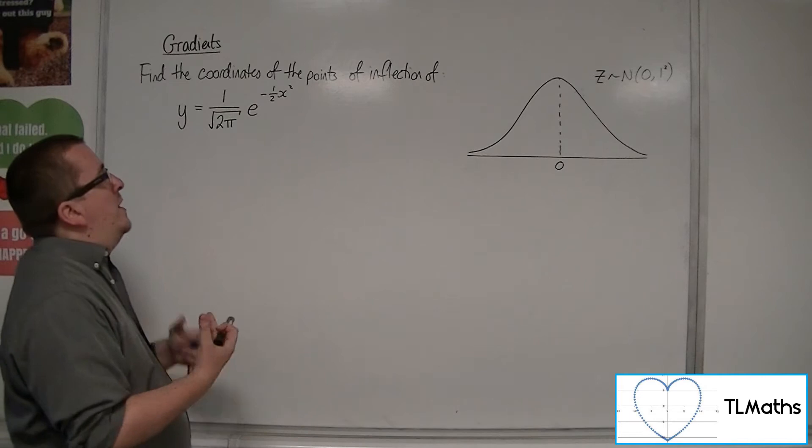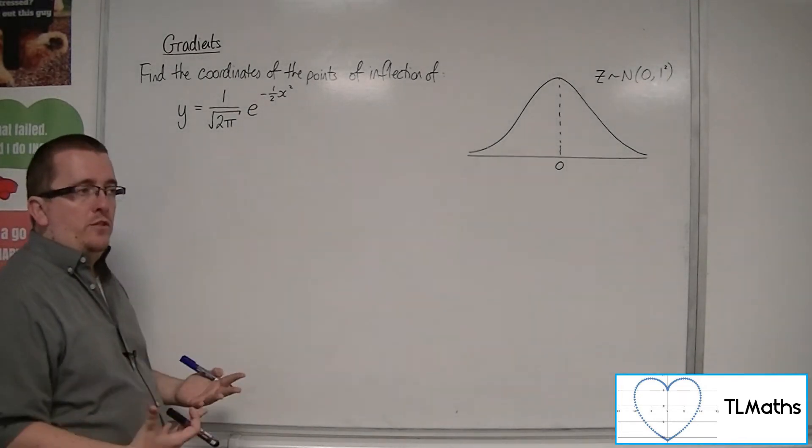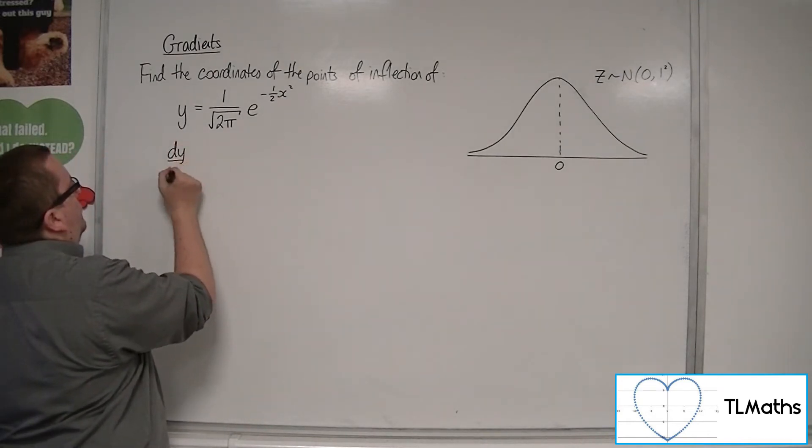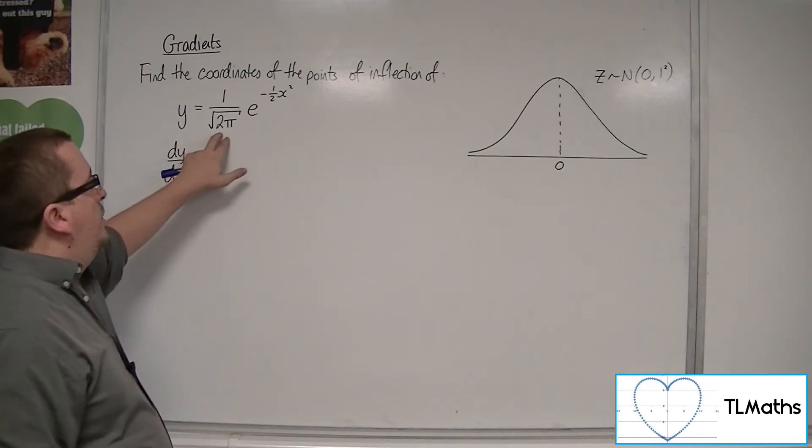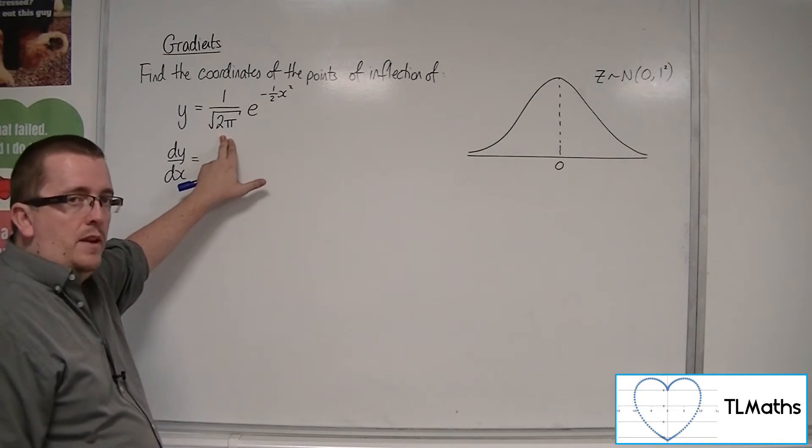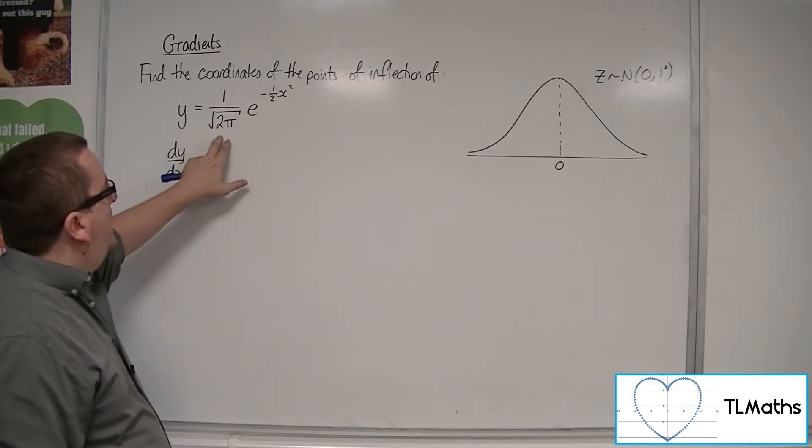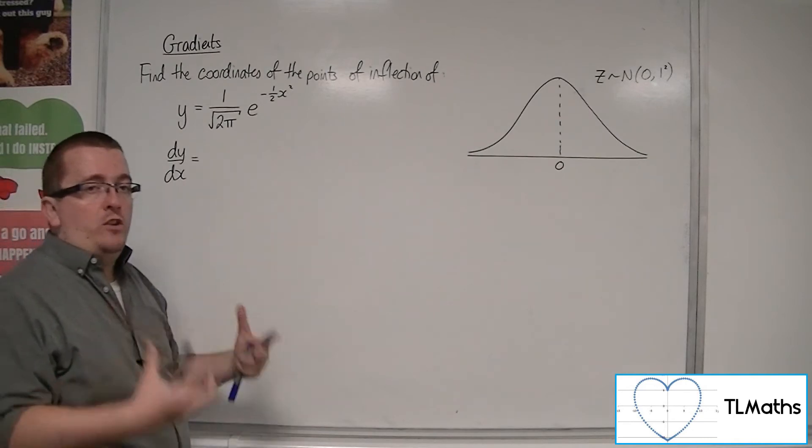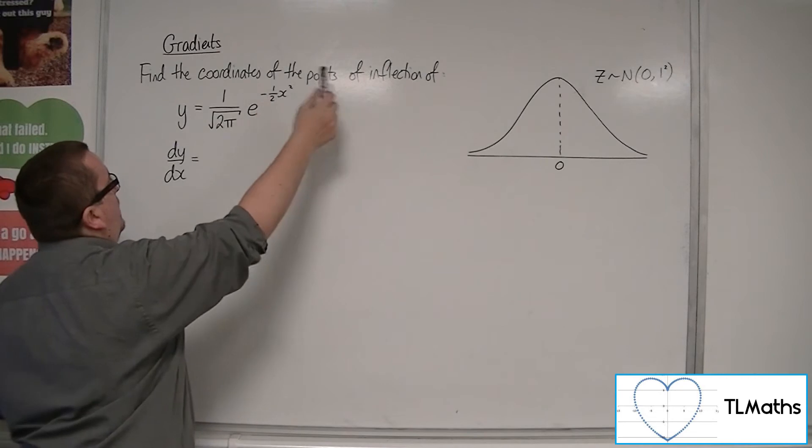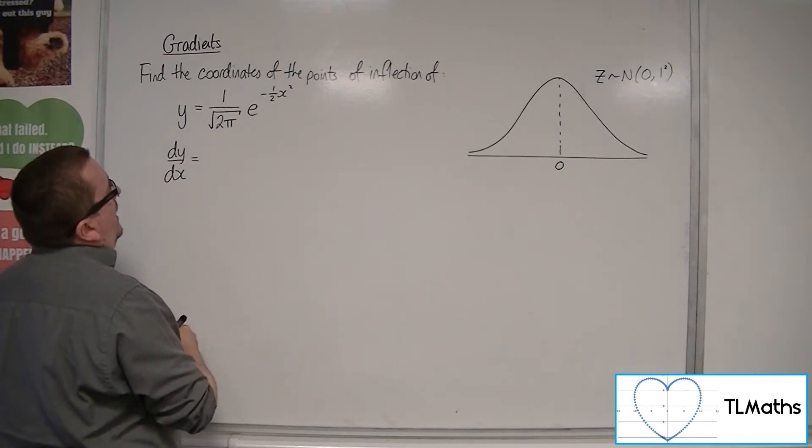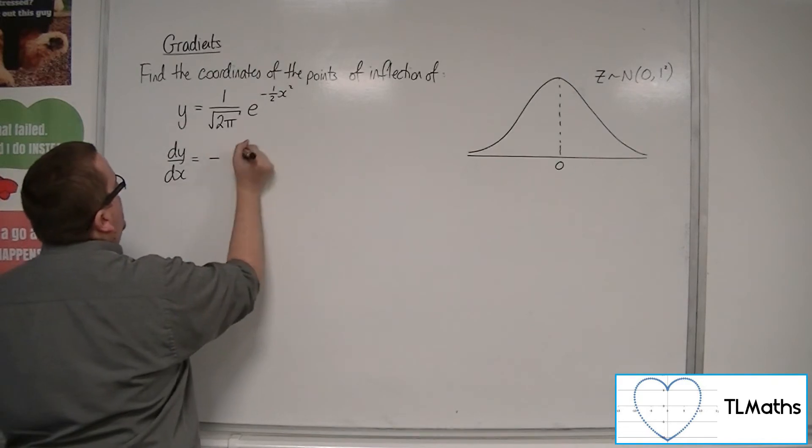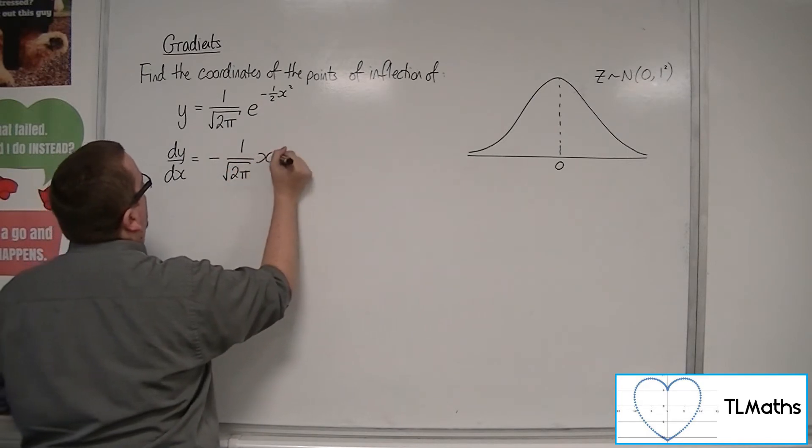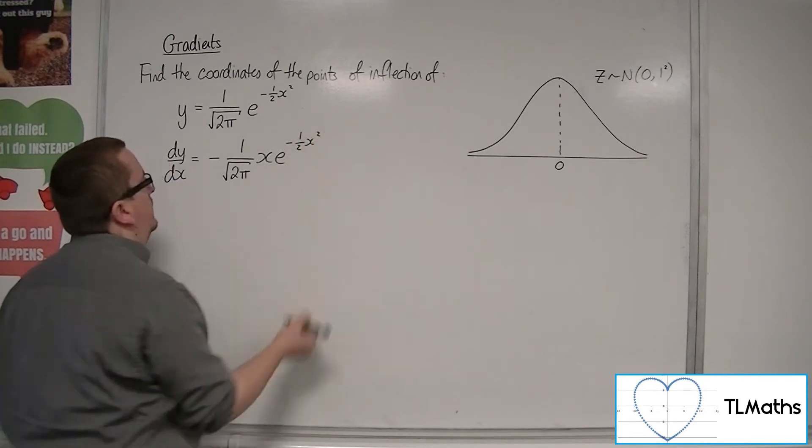So what we're going to do is try and find the points of inflection for this curve. So we're going to differentiate it. What do we need to be aware of? Well, we need to be aware that the 1 over root 2π is just a number. To differentiate e^(-1/2 x²), we're going to have to use the chain rule. So the derivative of what's up here will come down to the front, so we'll have -x. Let's put it as 1 over root 2π times x e^(-1/2 x²).